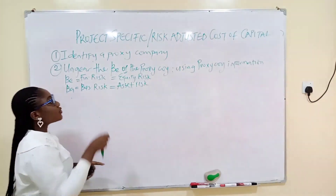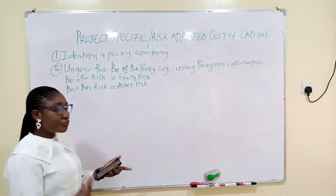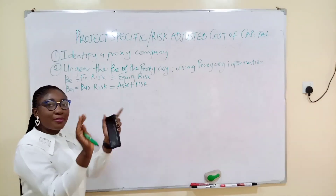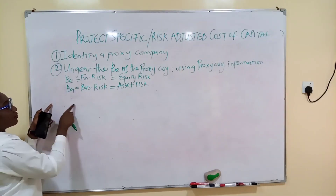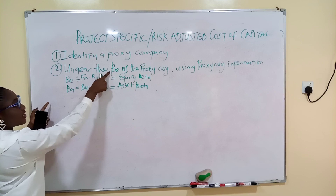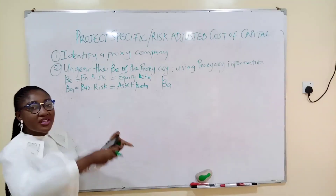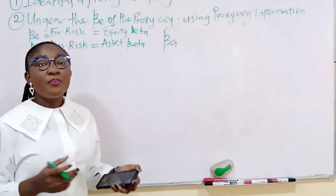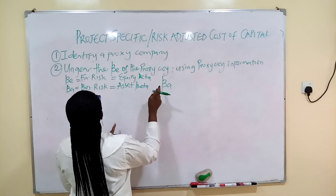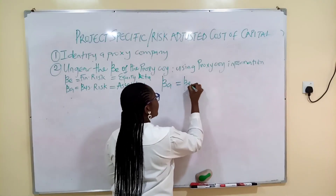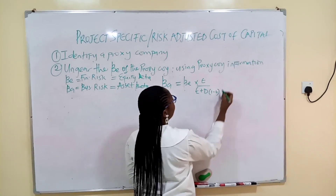There is a business risk associated with sandals. I want to take that from an identical company because I don't know about the sandal business — I want to evaluate this new project. I don't care about the finance risk of the proxy company; I don't want the equity beta. That's why you ungear: when you ungear you remove the debt element. The formula to ungear is: βa = βe × (E / E+D) + βd × (D / E+D), where D is post-tax.